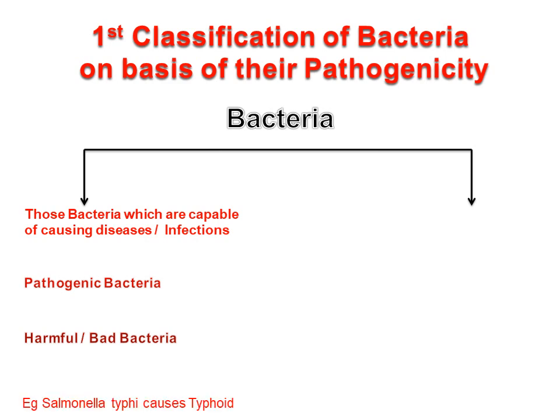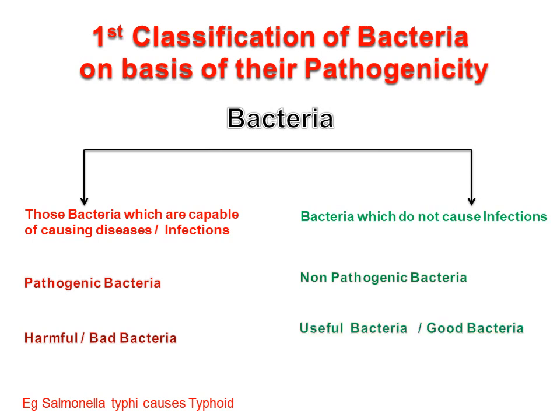Example: Salmonella typhi causes typhoid in human beings. Bacteria which do not cause infections are known as non-pathogenic bacteria. Some bacteria are useful and are known as good bacteria. Example: Lactobacillus, or Lactic Acid Bacillus, present in the GI tract of humans.